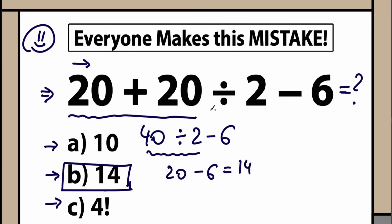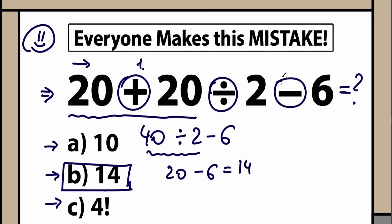What makes all the difference in the world is the order we do this problem. Do we do addition first, or division first, or subtraction first? It turns into a big argument, because when we choose addition first we get one answer, when we choose division first we get a completely different answer, and when we choose subtraction first we get yet another answer. In math, it's not acceptable to have three different answers — we need one and only one correct answer.